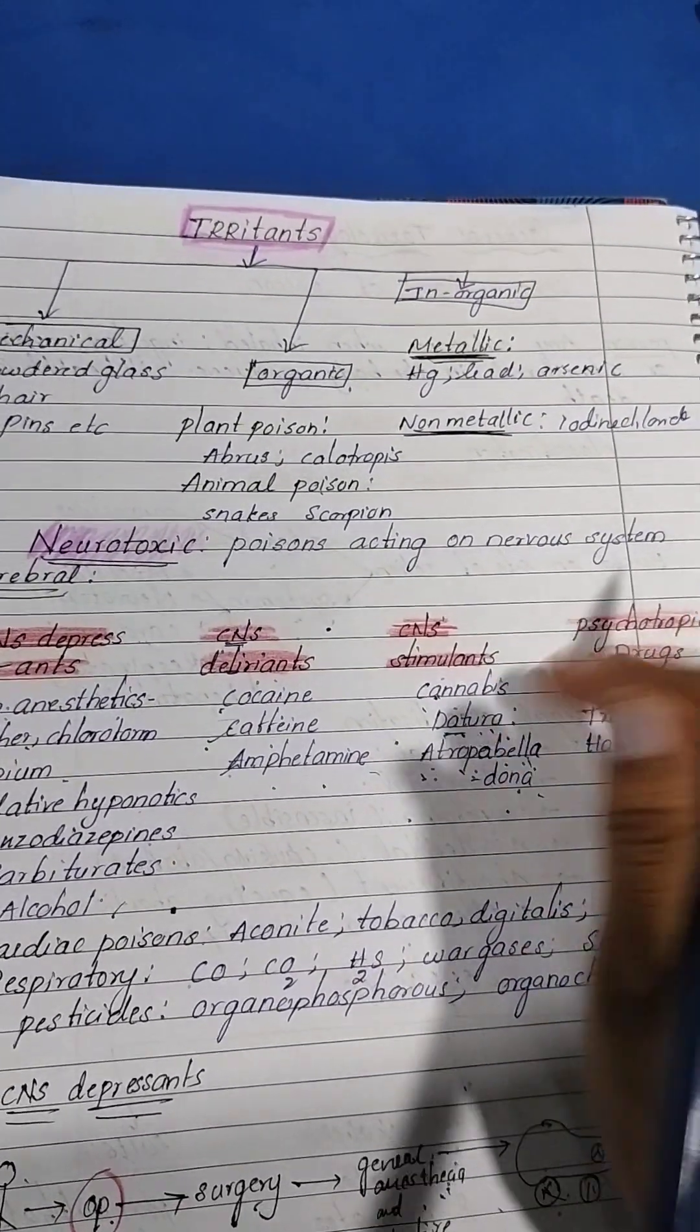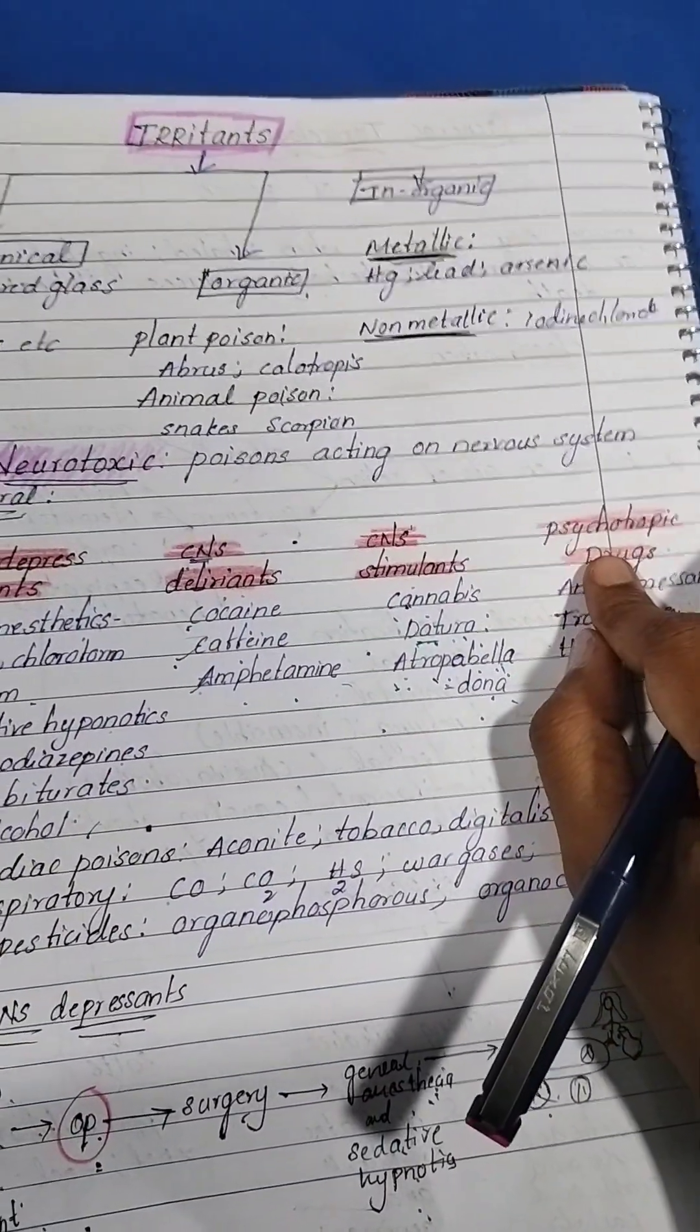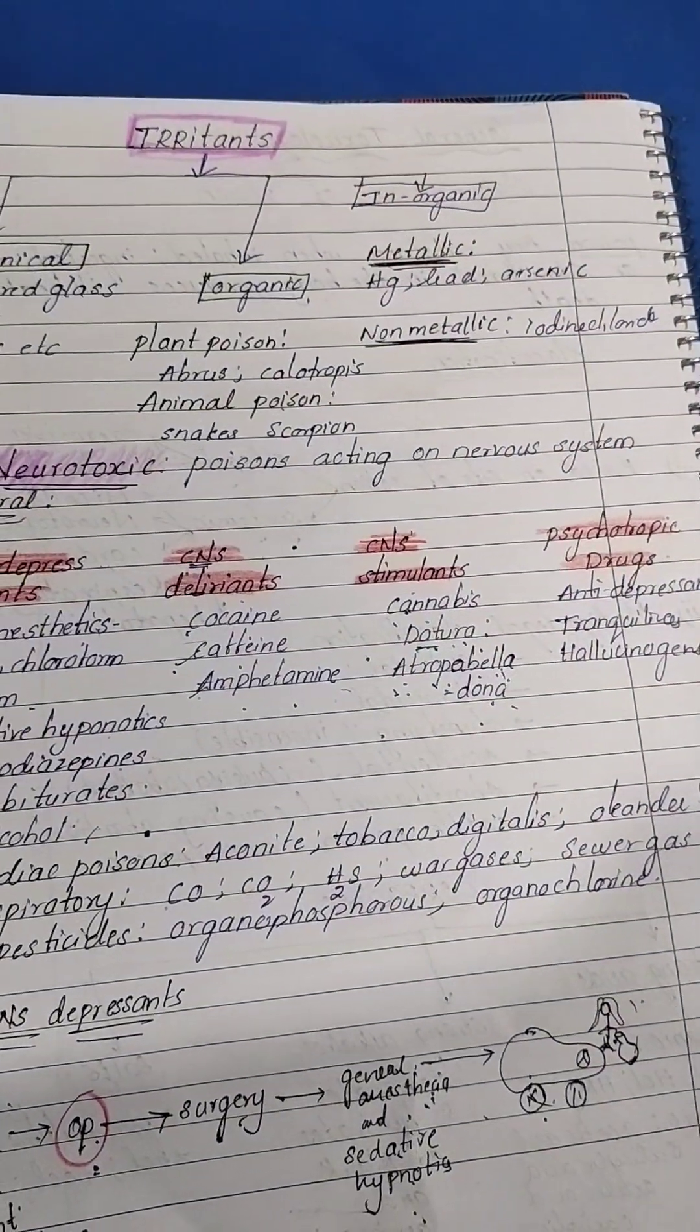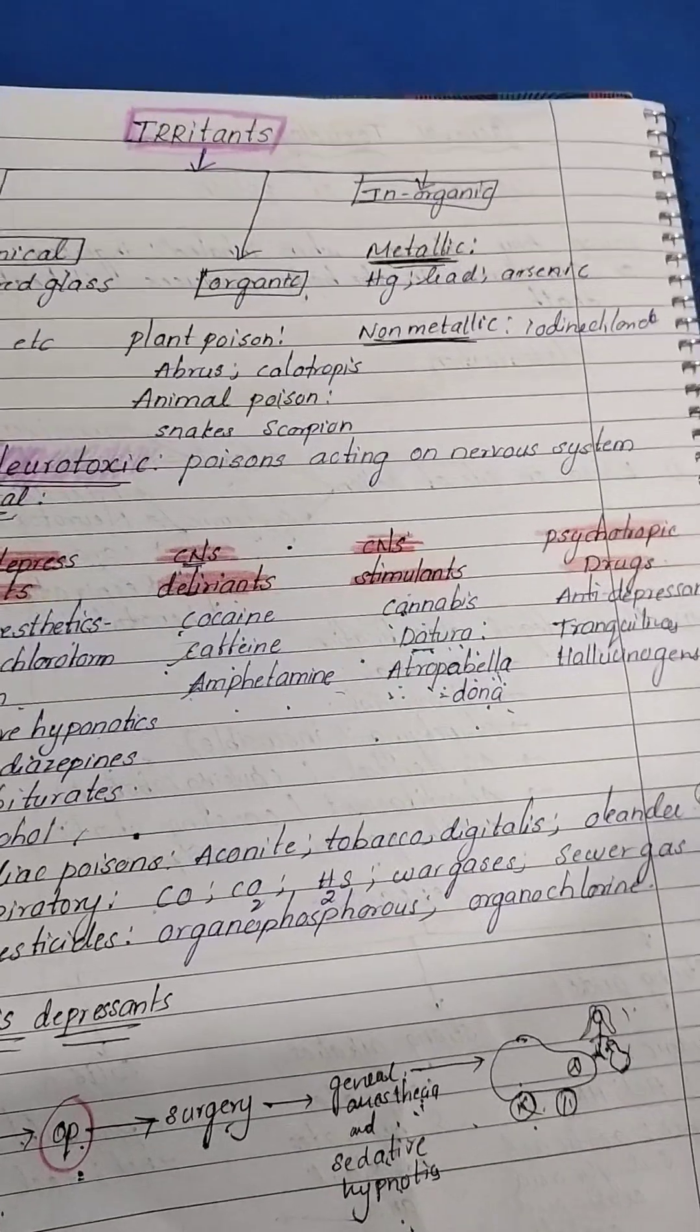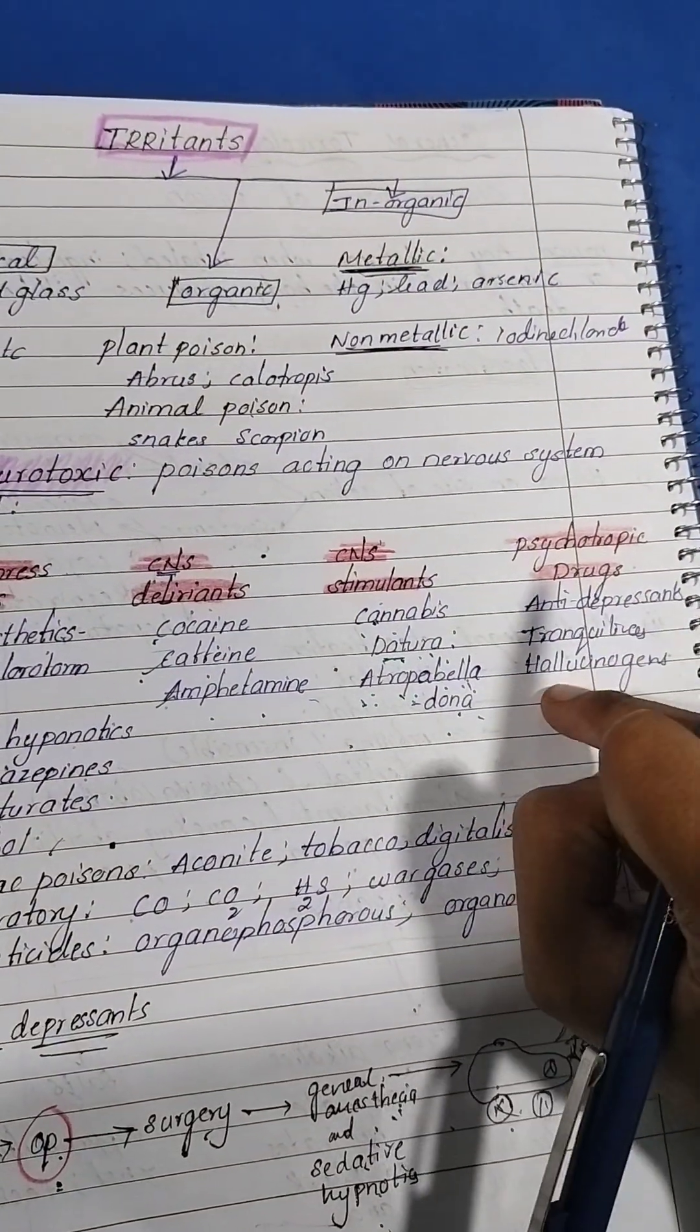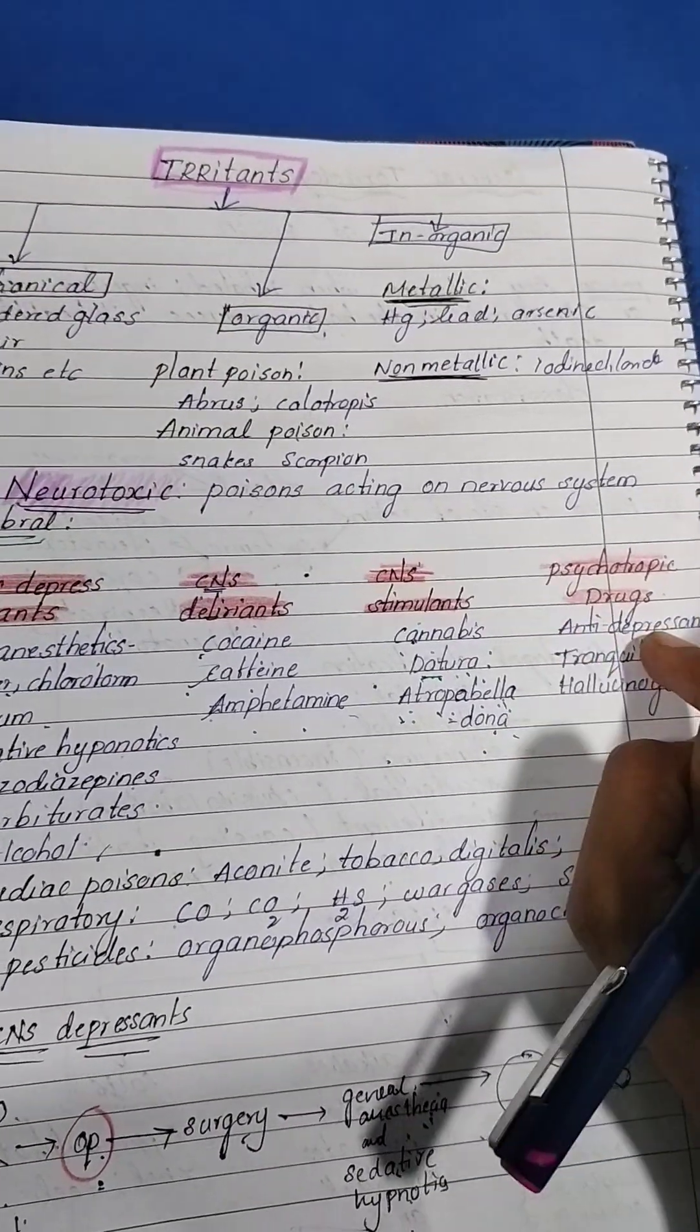Psychotropic drugs. We go to psychiatry whenever we have depression or anxiety. So antidepressants, whenever we have hallucination, hallucinogens, tranquilizers. You can remember like this.